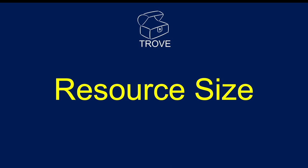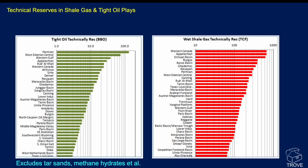If we look at the resource size for source rocks, in this study conducted by EIA and ARI, they came up with estimates for the amount of technically recoverable reserves in both tight oil and shale gas environments. You can see something like the Permian Basin has hundreds of billions of barrels of oil, and somewhere like West Canada we're talking about the best part of 700 trillion cubic feet of gas just in this one basin. This excludes tar sands, methane hydrates, and some other hydrocarbon accumulations.